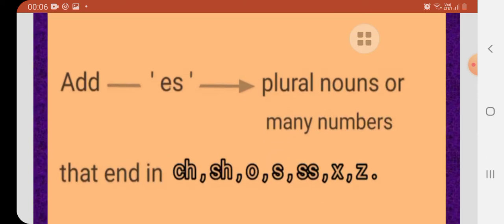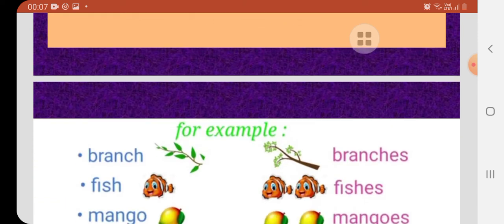Now come to the second rule. Add es. We have to add es when we change singular noun into the plural noun. So children, those nouns end in ch, sh, o, s, double s, x, z. We have to add es. We have to add es after the singular noun.